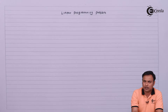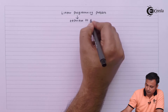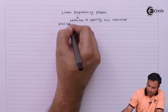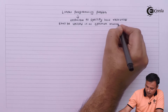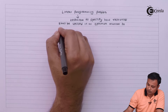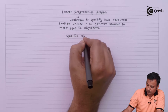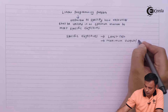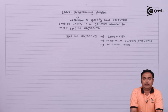So every linear programming problem is an optimization problem. In every linear programming problem we will have an objective. The objective defines what is the purpose of solving that problem.